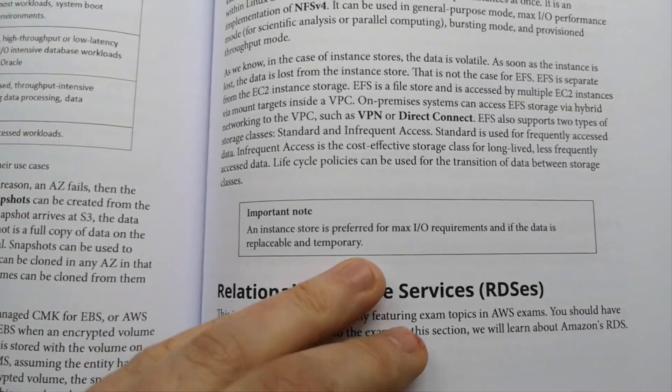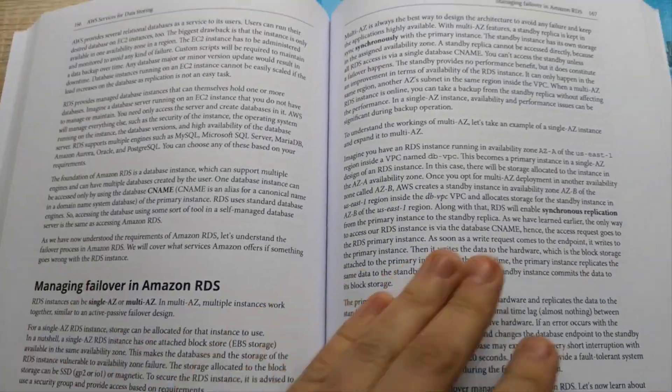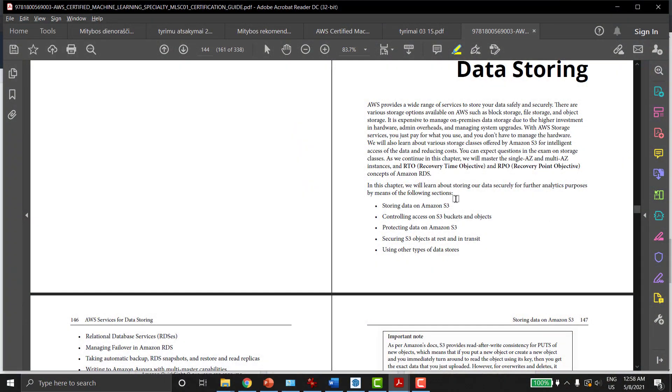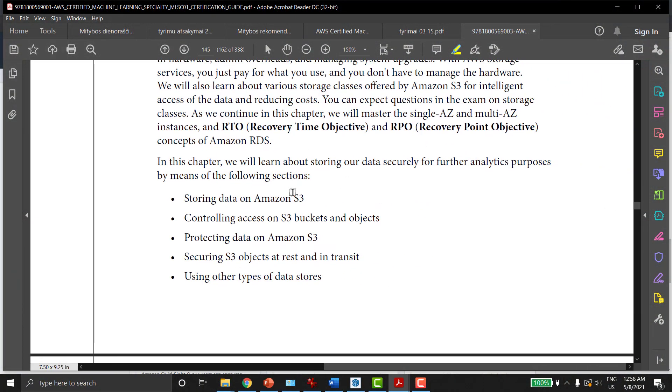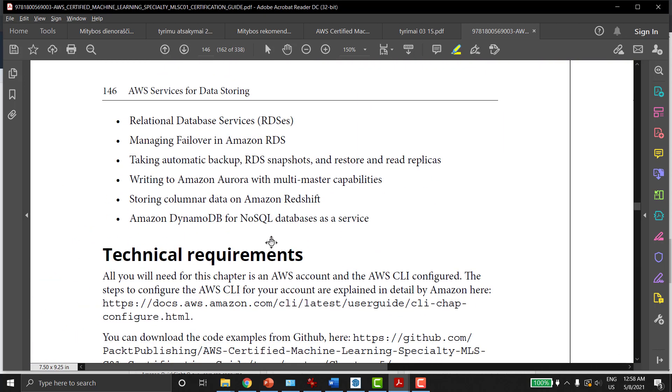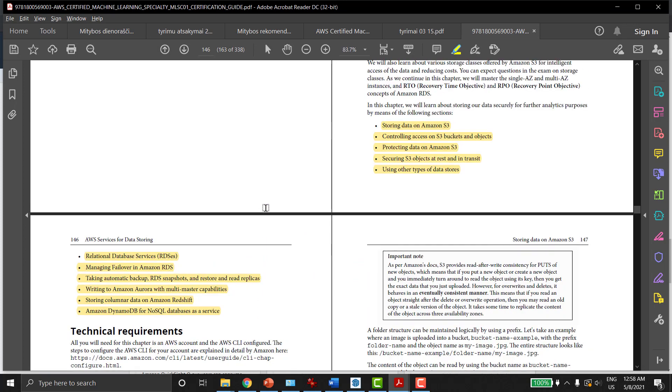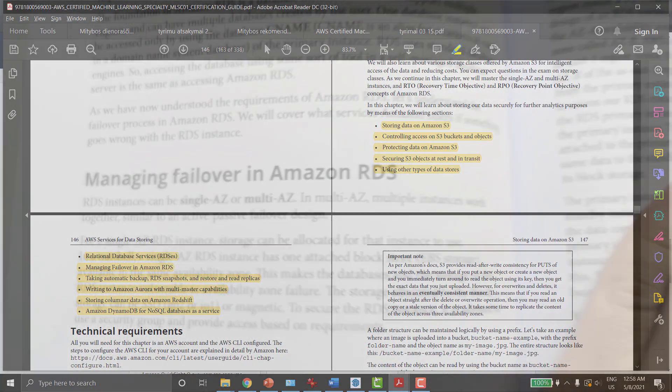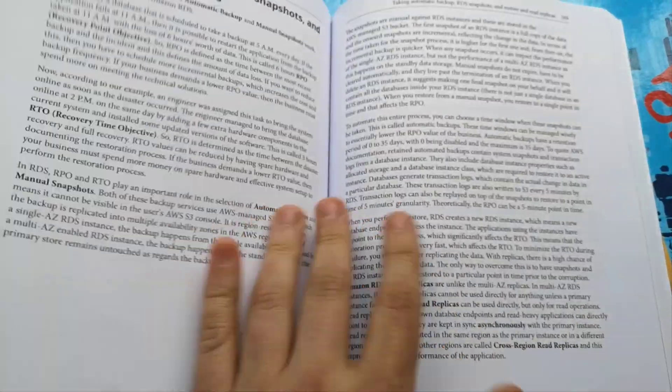This is one of the most important sections in this book and covers following topics. Storing data on Amazon S3. Controlling access on S3 bucket and object. Protecting data on Amazon S3. Securing S3 object at rest and in transit. Using AWS type of data stores. Relational database services. Managing failover in Amazon RDS. Taking automatic backup and snapshots. Writing data to Amazon Aurora. Using Amazon Redshift. And Amazon DynamoDB for NoSQL as a service.